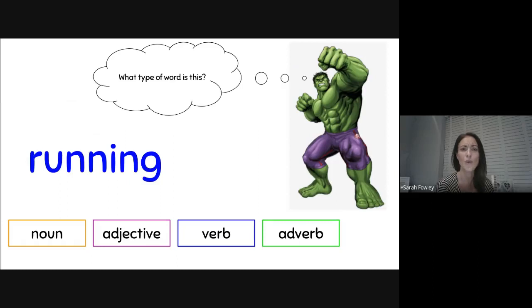What type of word is this? Running. What type of word is the word running? Now, with any questions like this, I need to remind myself what each word type is. So, a noun. A noun I know is a name, place, or thing. Running isn't a name, place, or thing.